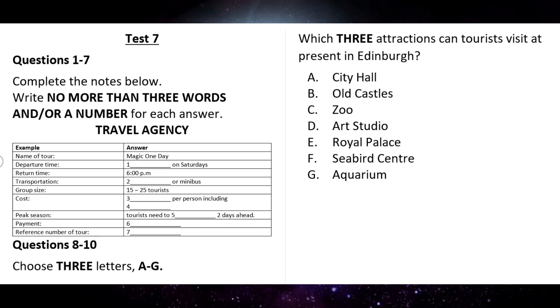You will see there is an example that has been done for you. On this occasion only, the conversation relating to this will be played first. Good morning. Wonderful travel agency. How can I help you? Good morning. I'd like to know about the information about your short trip. What's the name of the trip? Magic one day. Right. Could you introduce me to the tour? Of course. The name of the trip is Magic one day. So, Magic one day has been written in the space. Now, we shall begin.